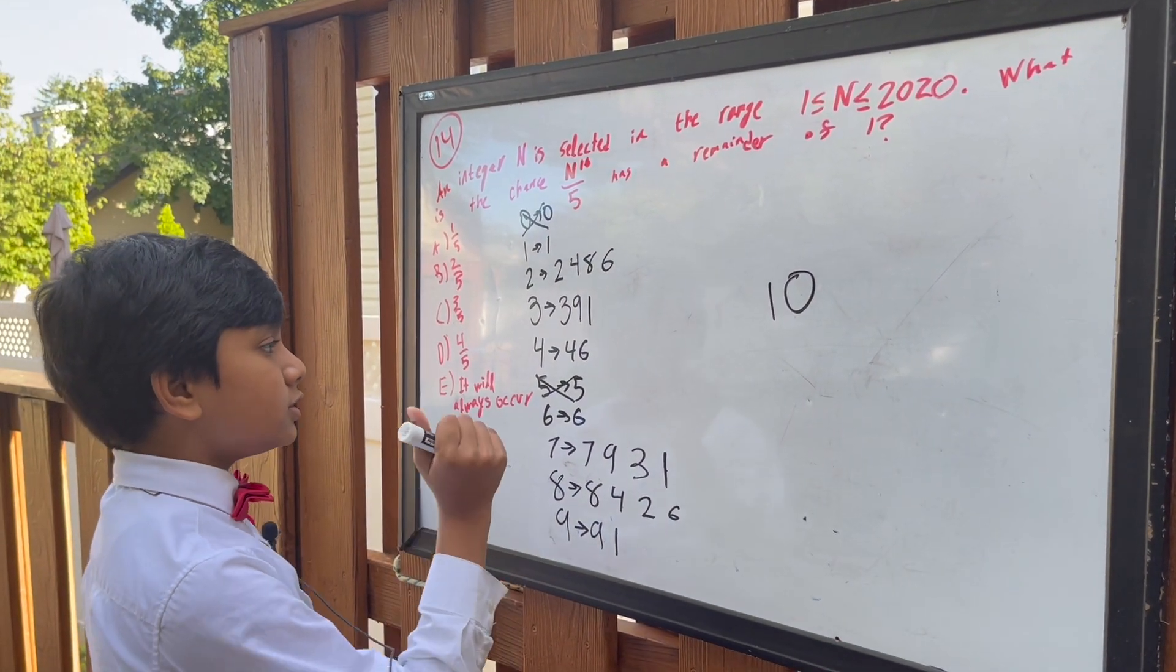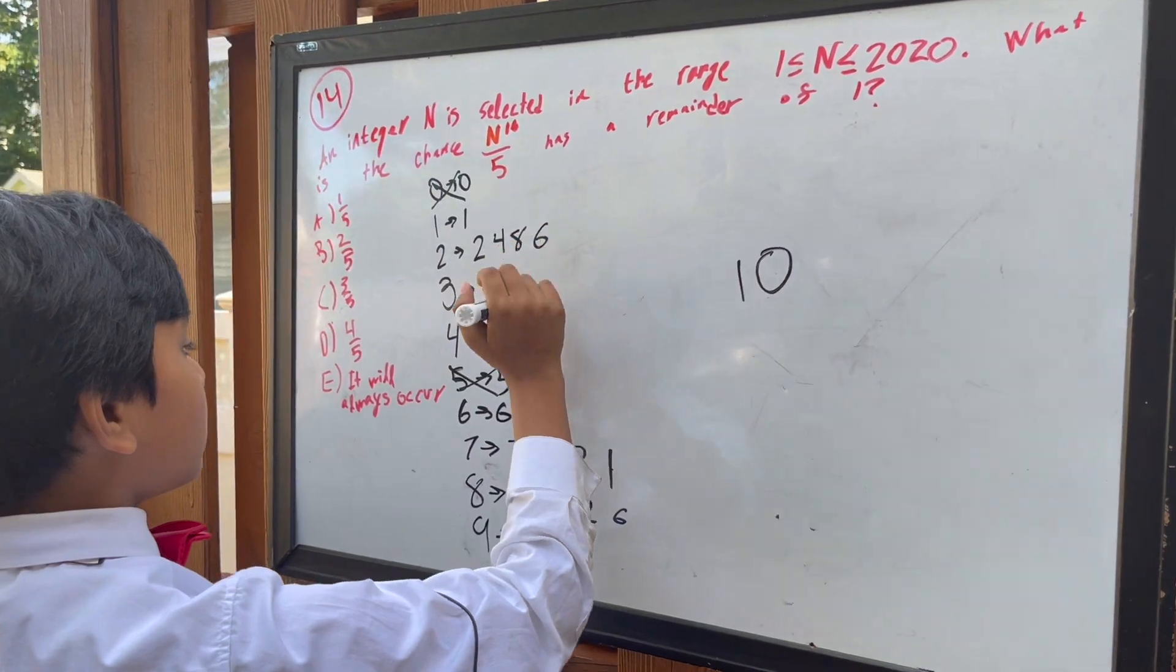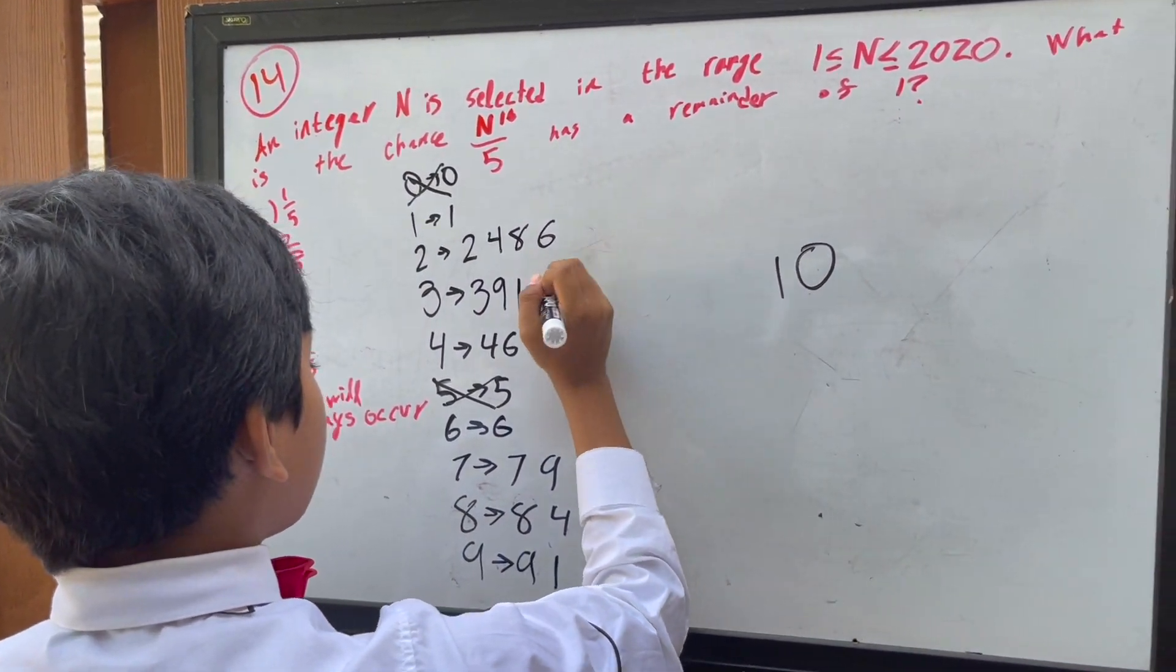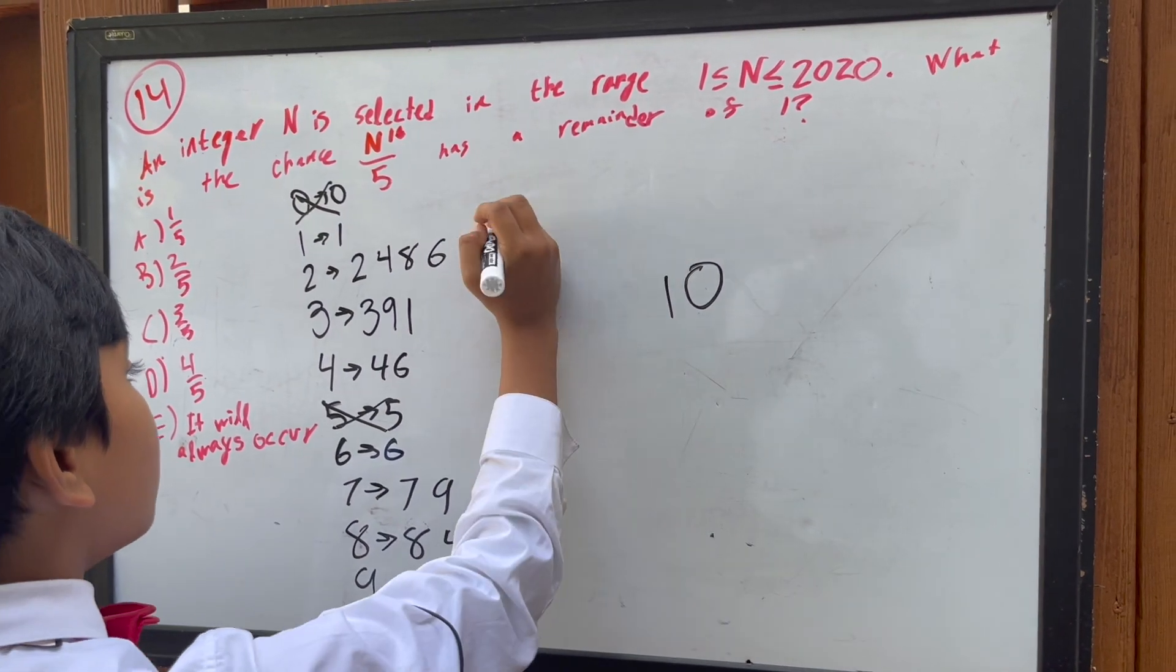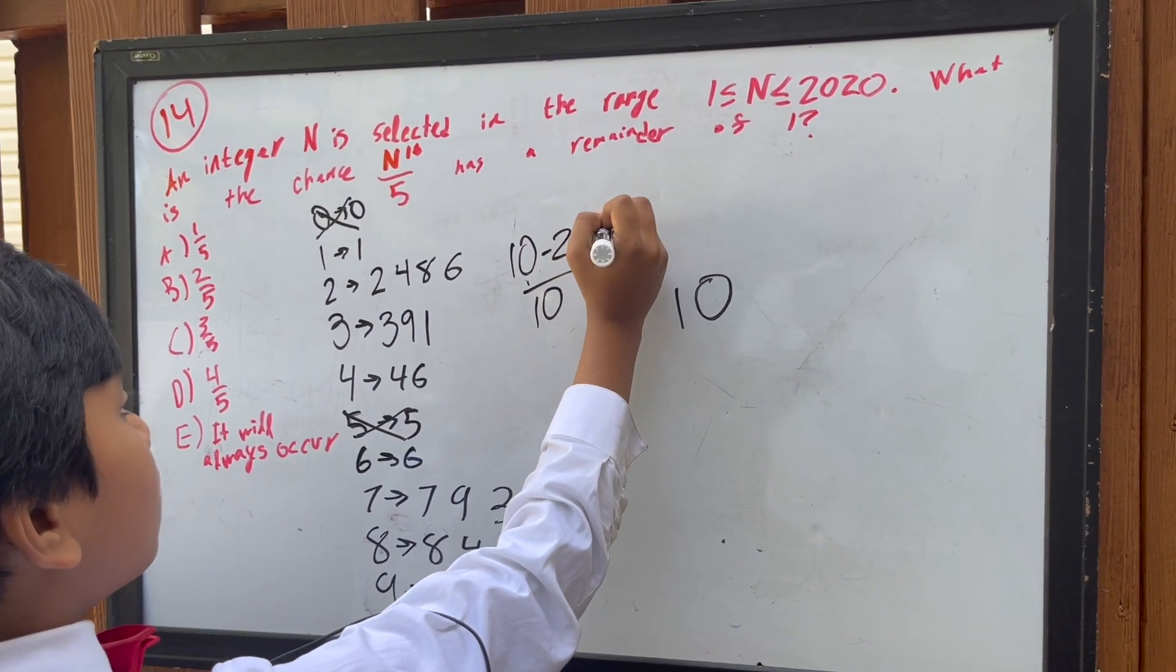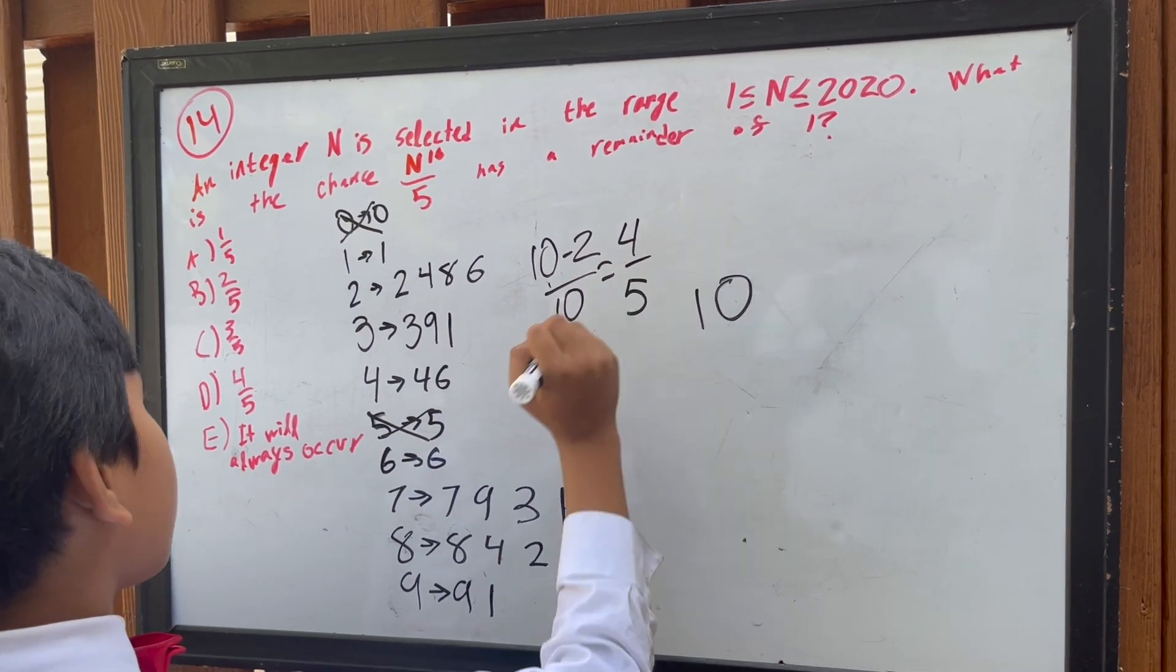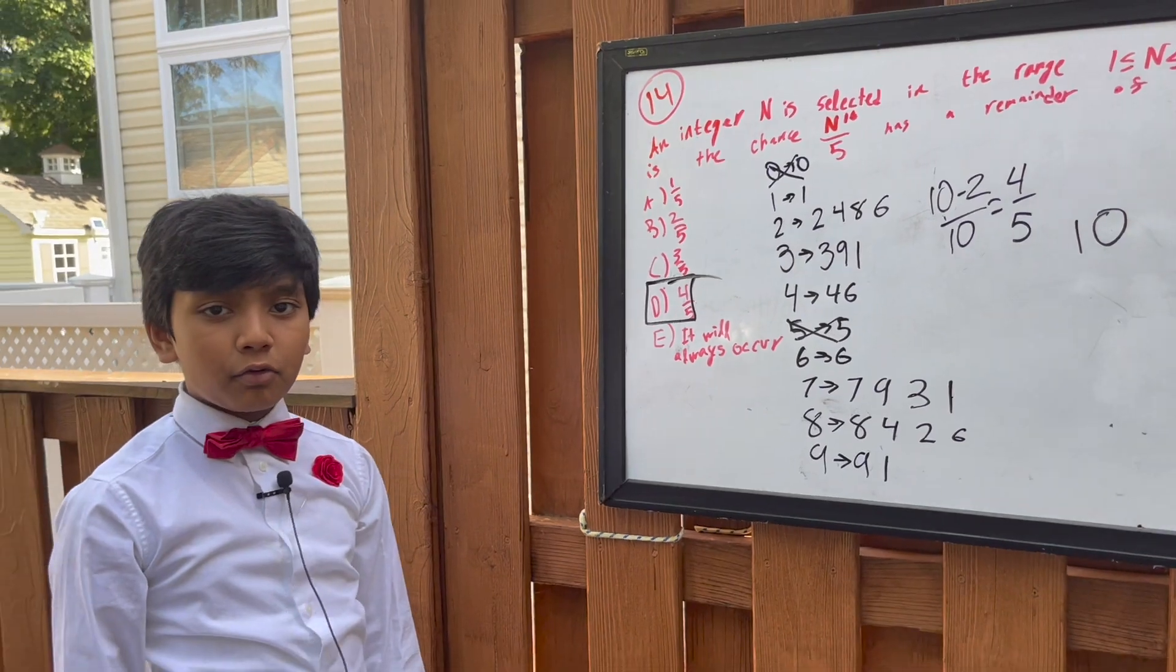Okay. So that is the thing. There are 2 that don't work. So it's 10 minus 2 over 10, which is equal to 4 over 5, which makes the answer D. Thank you, everybody, for watching, and we will see you in the next one.